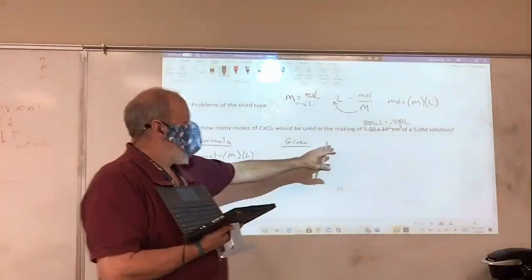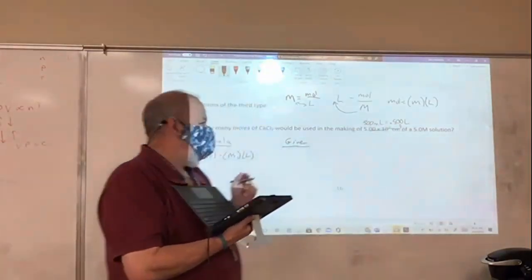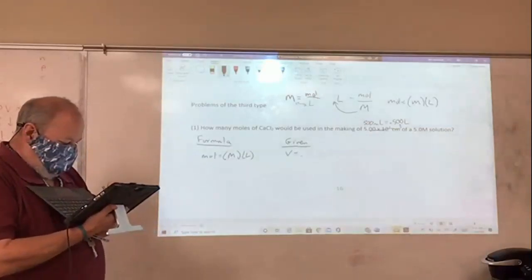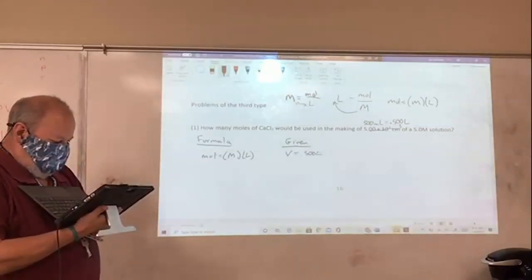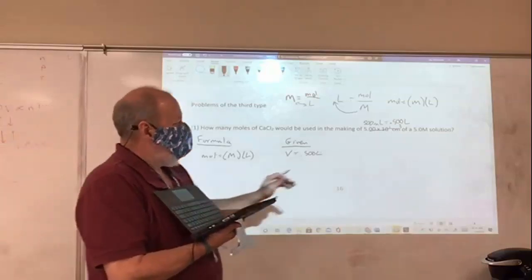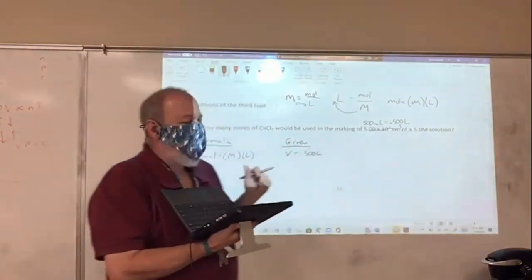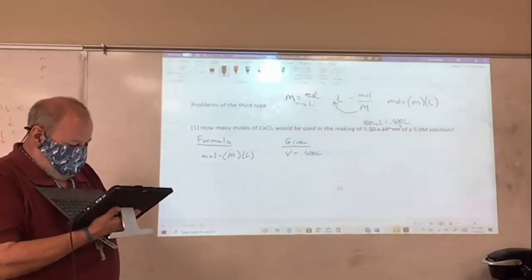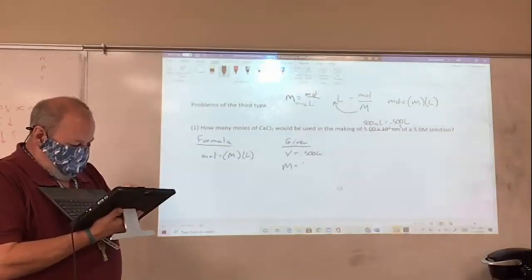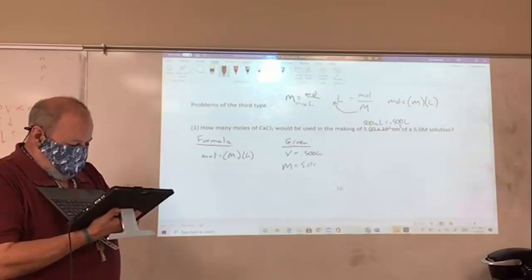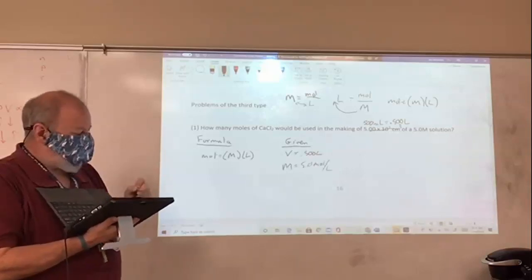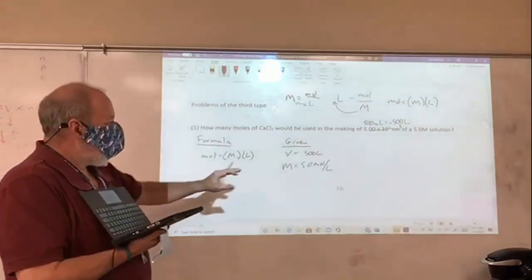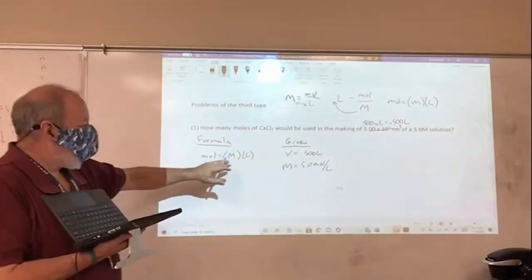I have been given that I have 0.5 liters for volume. So I'm going to write down volume equals 0.5 liters. And then I've been given that my solution is 5.0 molar. So 5.0 moles per liter. So now I've been given this information. And now I go back and say, do I have enough information to solve this formula?